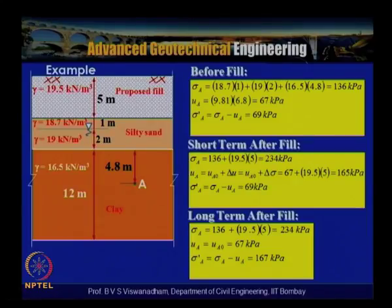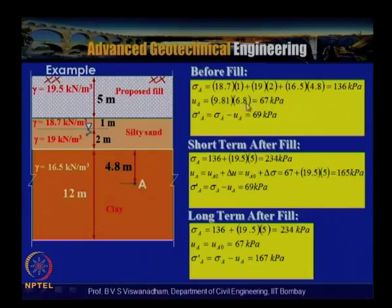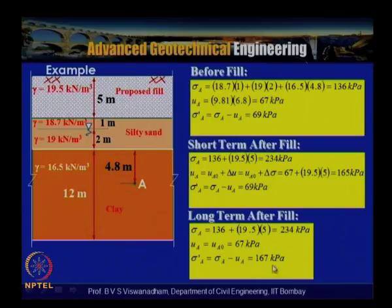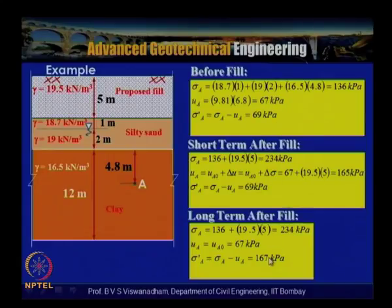Long term after the fill, assuming complete consolidation: total stress remains 234 kPa, but pore water pressure drops back to 67 kPa (assuming no change in the groundwater table). Therefore σ'A = 234 − 67 = 167 kPa. The effective stress has increased from 69 kPa to 167 kPa — nearly doubled — indicating significant strengthening of the soil due to consolidation.